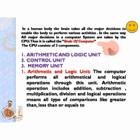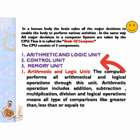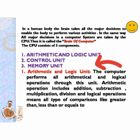In the same way, all major decisions in a computer system are taken by the CPU. That's why it is called the brain of the computer. The CPU consists of three components: ALU means arithmetic and logic unit, CU means control unit, and MU means memory unit. These three were seen in the block diagram just before.